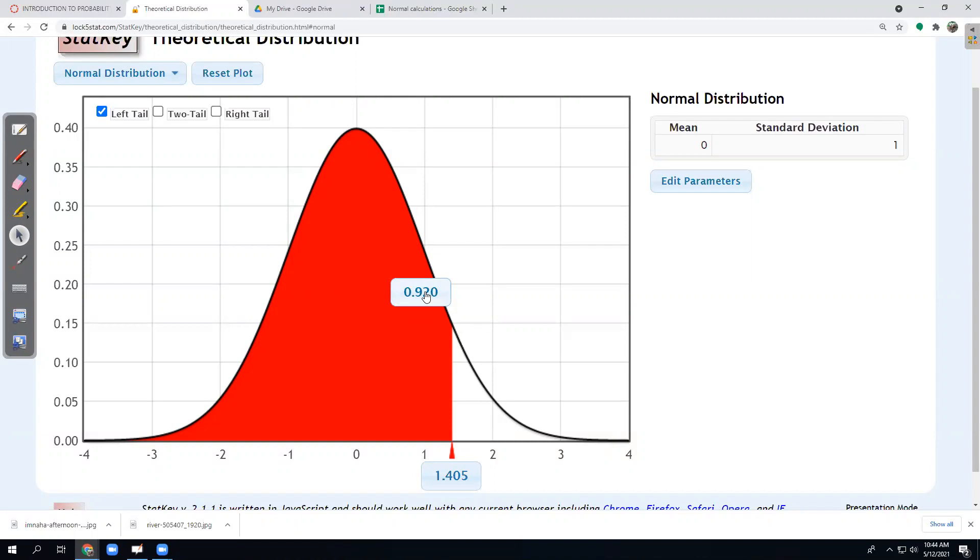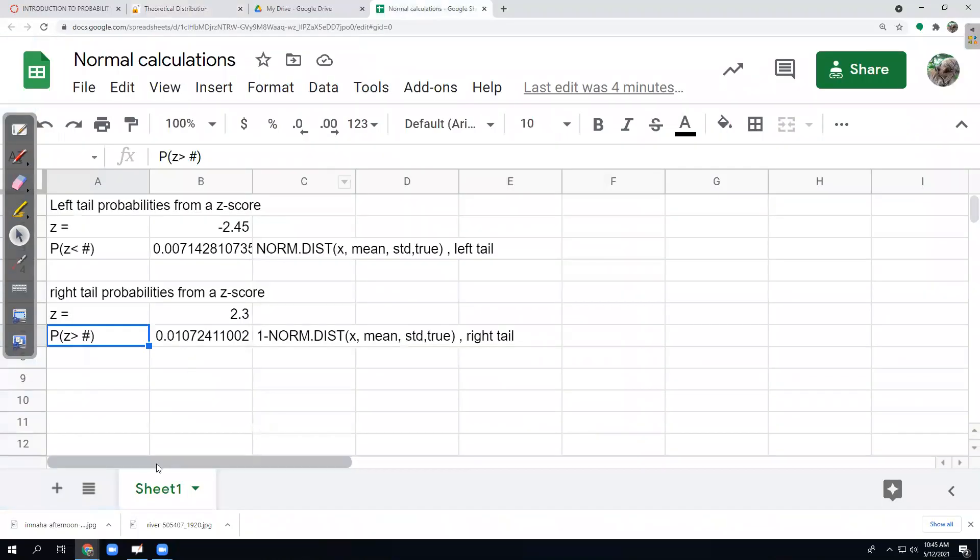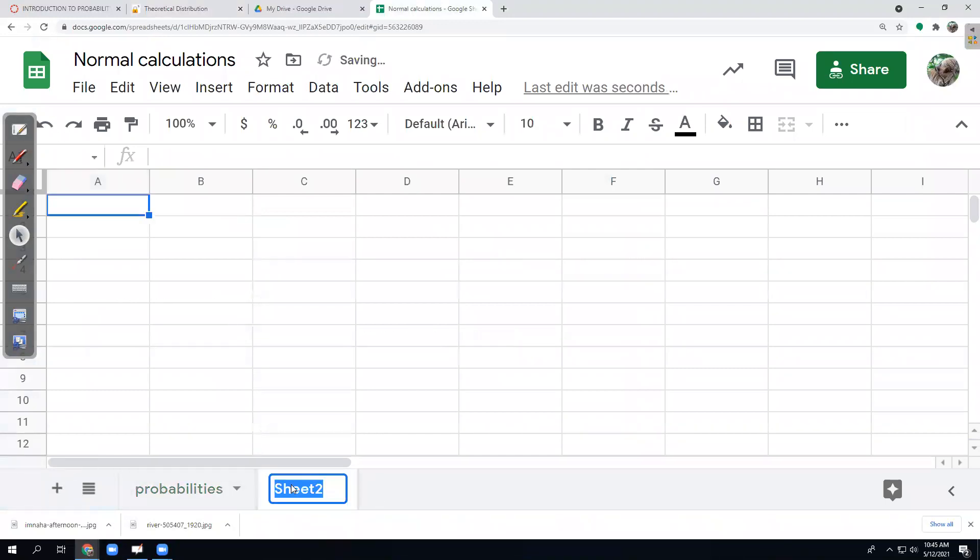Now, the norm dist in a spreadsheet, that computes these areas, these probabilities. And I want to reverse that. So if I go over to our spreadsheet, so this is a probability. I'm going to change this tab to probability. A new one for inverse probability.